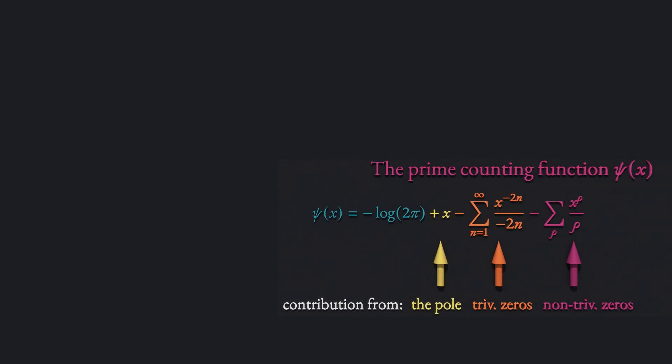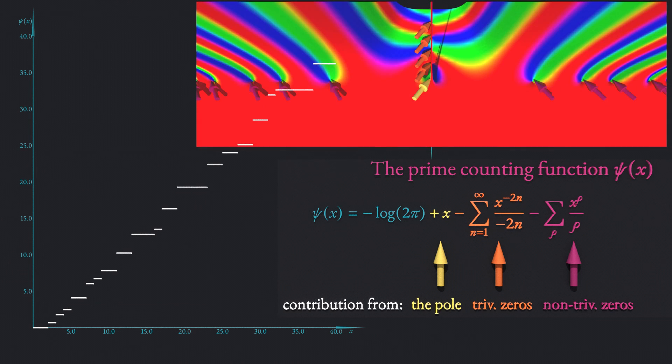Let's have one more look at the individual contributions to the ψ function. As stated at the beginning, the overall shape of the ψ function is obtained from the location of the pole at z equal to 1. It is therefore tightly related to the divergence of the harmonic series. The contribution from the trivial zeros can be summarized into a closed form, which can be ignored for large x and it is only needed to restore the shape of the ψ function between 1 and 2.